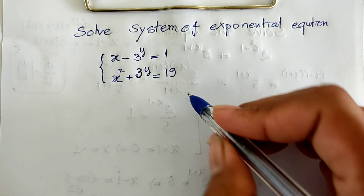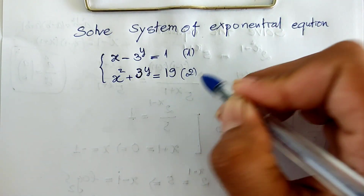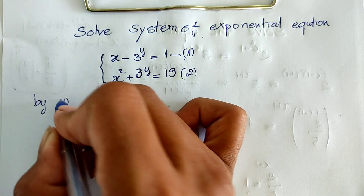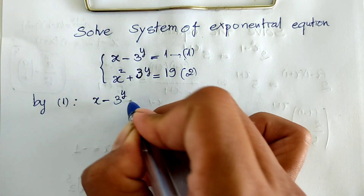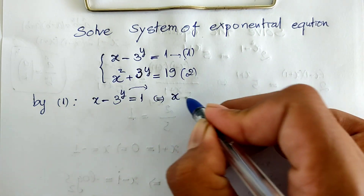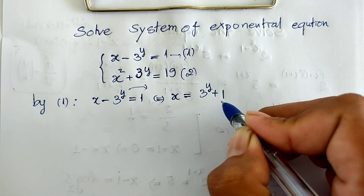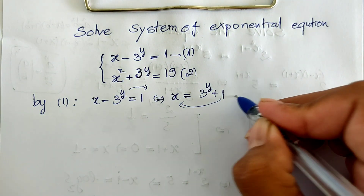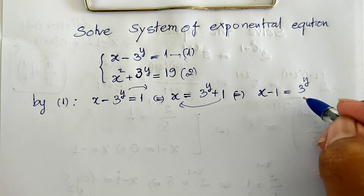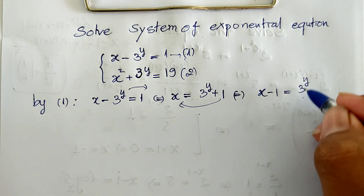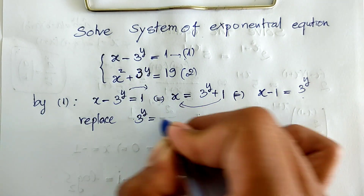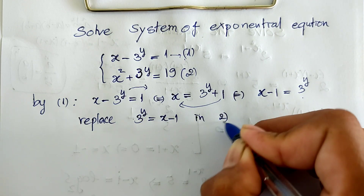We have the first equation and the second equation. From the first equation, h minus 3 to the power y equals 1. I move 3 to the power y to the right side: h equals 3 to the power y plus 1. Rearranging, h minus 1 equals 3 to the power y. Now I replace 3 to the power y in the second equation — replace 3 to the power y with h minus 1 in the second equation.